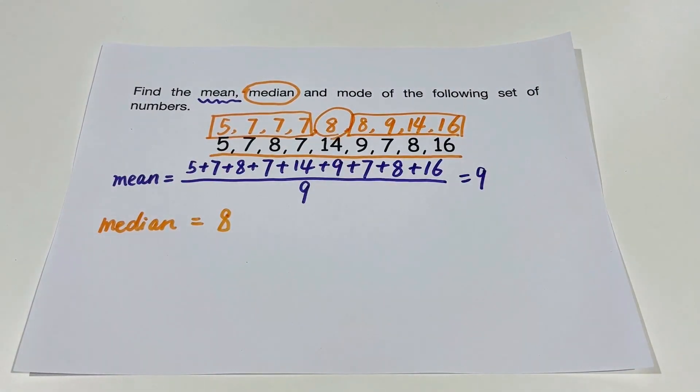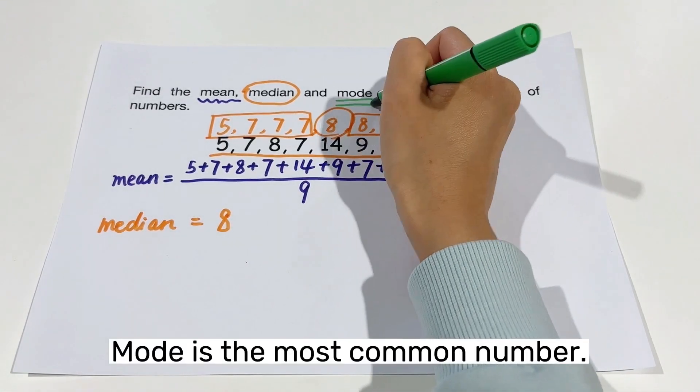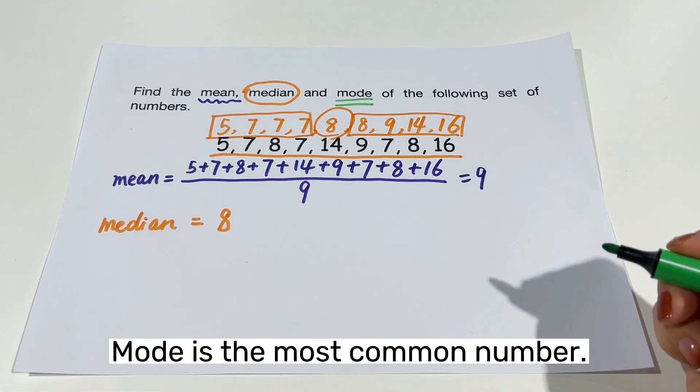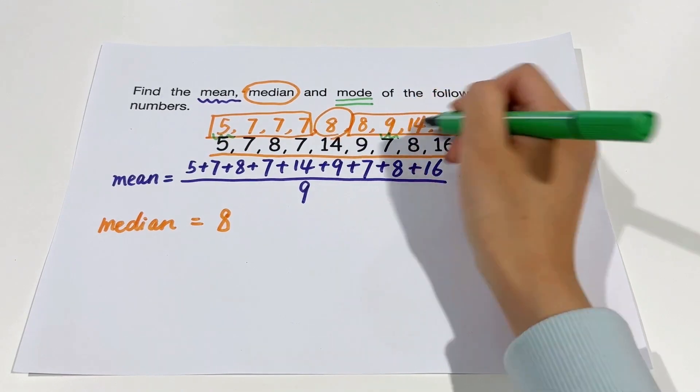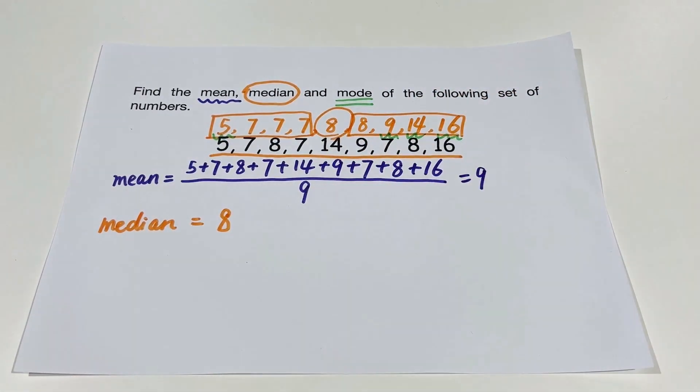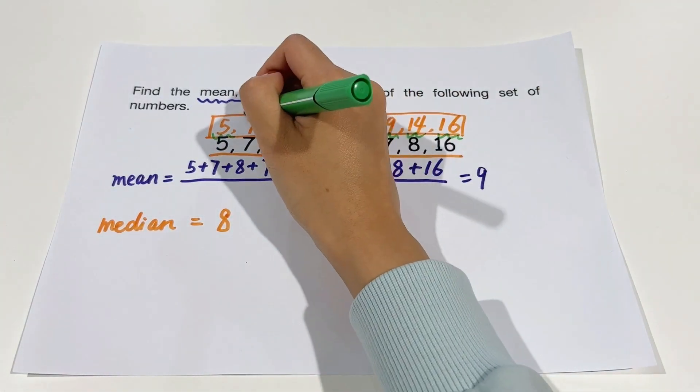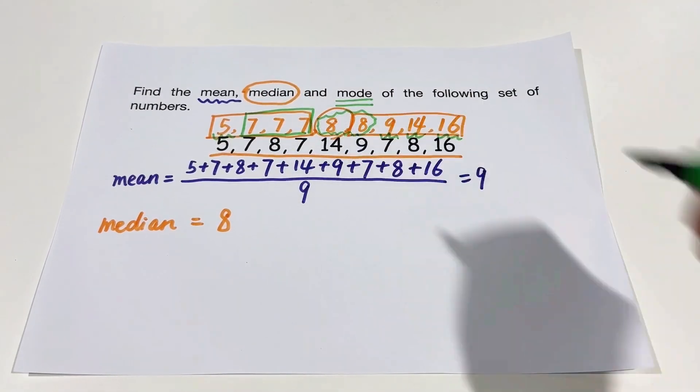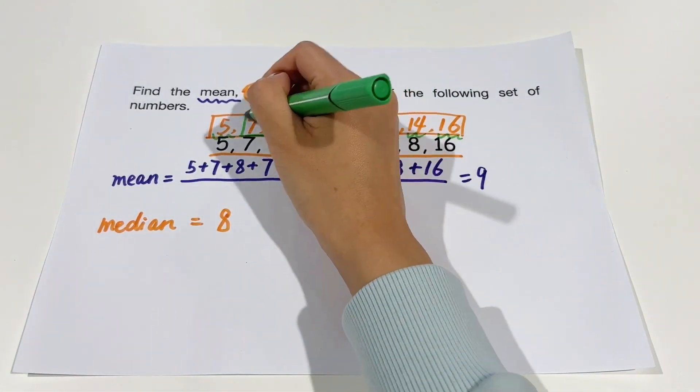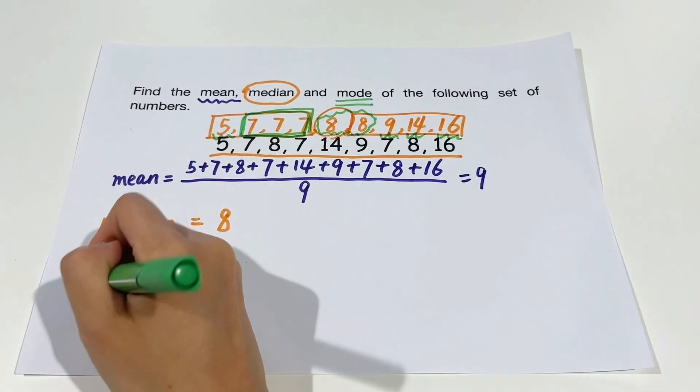Mode is the most common number. Calculating the mode is fairly straightforward. Place all numbers in a given set in order, this can be from lowest to highest or highest to lowest, and then count how many times each number appears in the set. The one that appears the most is the mode.